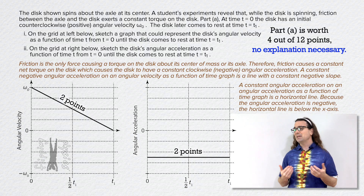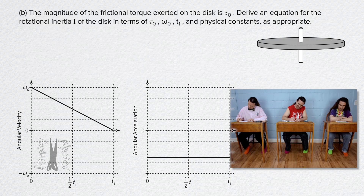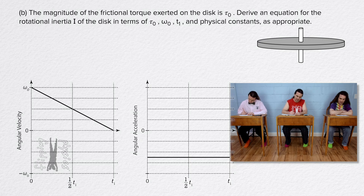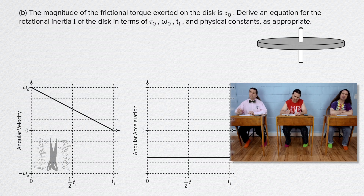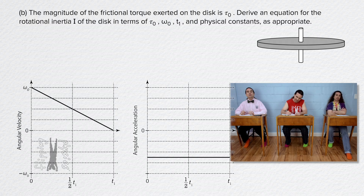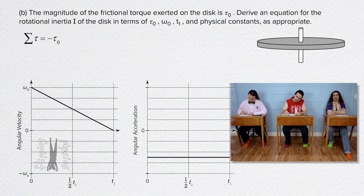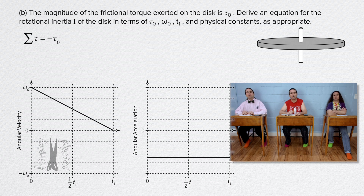Bo, please read and answer part B. The magnitude of the frictional torque exerted on the disk is tau naught. Derive an equation for the rotational inertia I of the disk in terms of tau naught, omega naught, T1, and physical constants as appropriate. The only force causing a torque on the wheel about its axis of rotation is the force of friction. So when we sum the torques on the wheel about its axis of rotation, the net torque equals the negative of torque naught. It is negative because it is opposite the direction the wheel is spinning, which is defined as positive in the problem. Net torque is also equal to rotational inertia times angular acceleration.